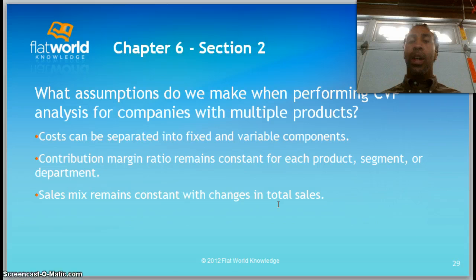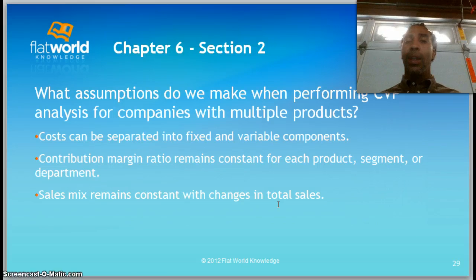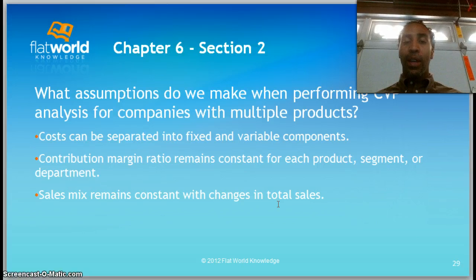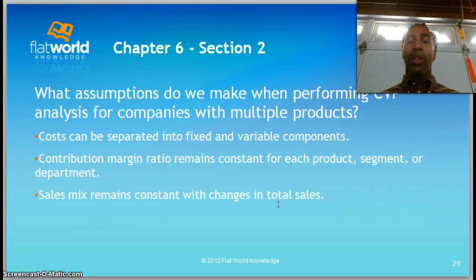What assumptions do we make when performing CVP analysis for companies with multiple products? Costs can be separated into fixed and variable components. The contribution margin ratio remains constant for each product, segment, or department, and the sales mix remains constant with changes in total sales.